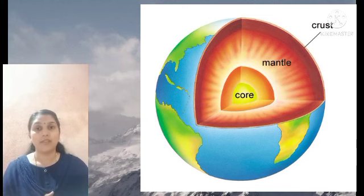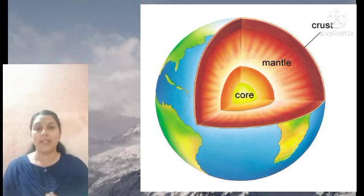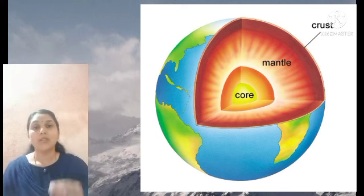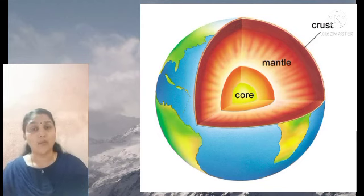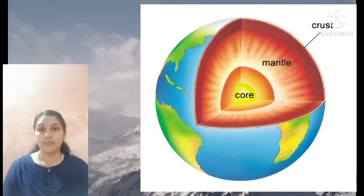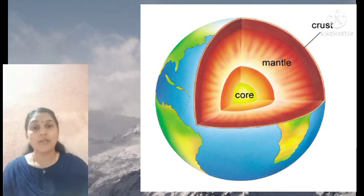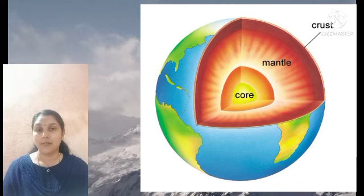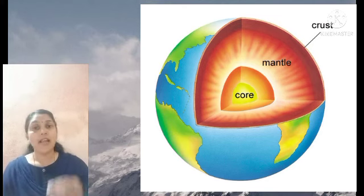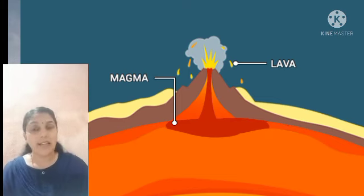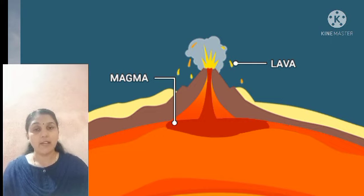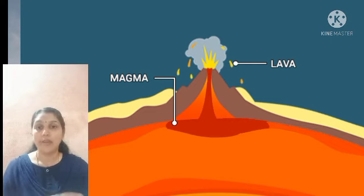Crust, mantle, and core are the three layers of the earth. In the third layer, the core, it is too hot. The rocks in that part are in the form of liquid because of the very high temperature. That molten rock is known as magma.